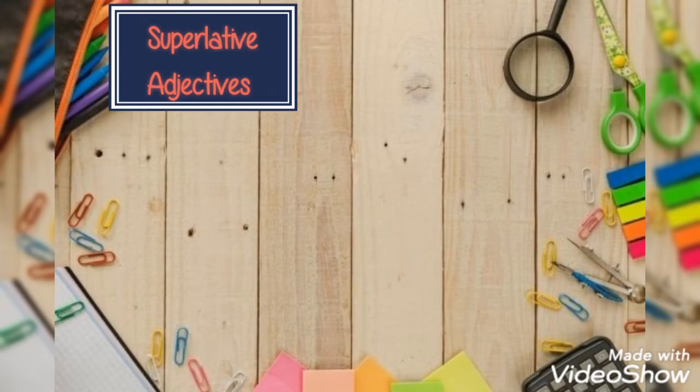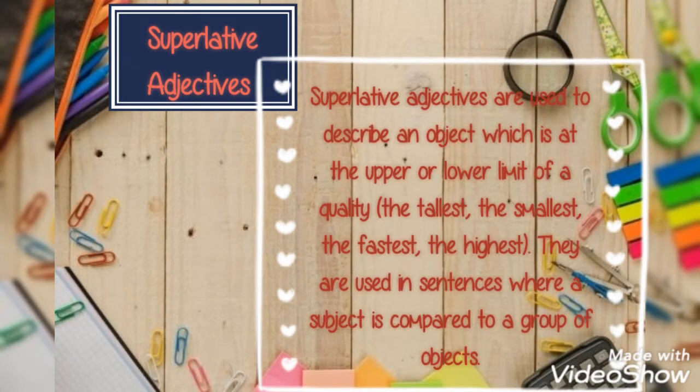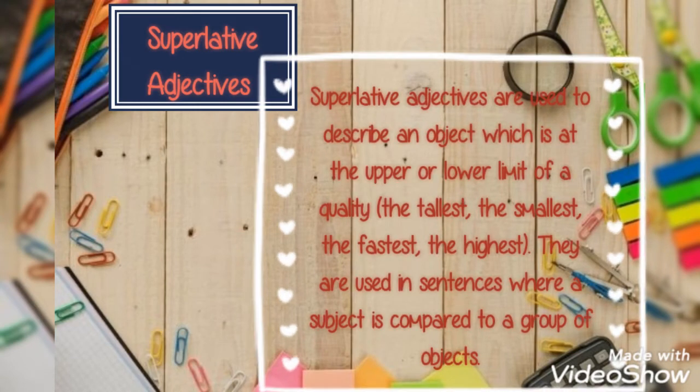Superlative adjectives: superlative adjectives are used to describe an object which is at the upper or lower limit of a quality — the tallest, the smallest, the fastest, the highest. They are used in superlative adjectives where a subject is compared to a group of objects.